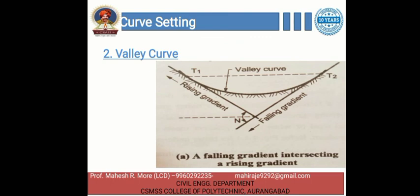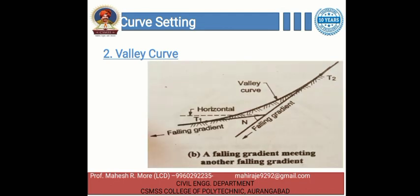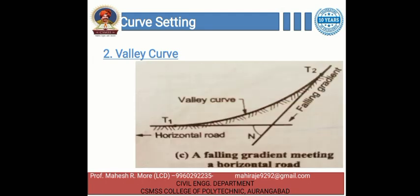The next type is the valley curve. The curves which have a convex surface on the downward side are termed as valley curves. The situations include a falling gradient intersecting a rising gradient, a falling gradient meeting another falling gradient, and a falling gradient meeting a horizontal road.